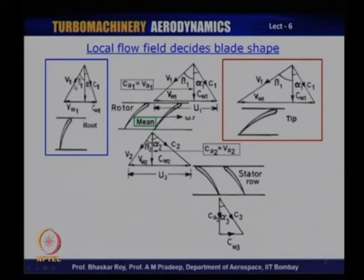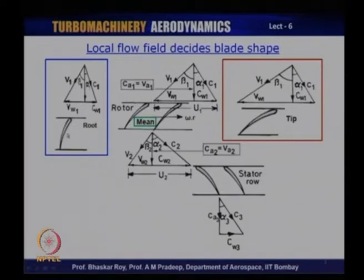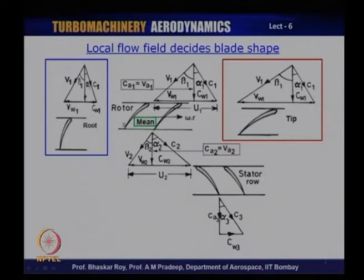At the root, the velocity V1 is much less and the angle beta 1 with reference to the axial direction is much less. The tangential component V_W1 is also much less, even if C1 remains of the same order. As a result, the root section of the blade now needs to be oriented towards this direction. Hence the orientation of the root section is quite different from the orientation of the mean section. The root section has to be at a different angle and the mean section would have to be at a different angle, in consonance with the relative flow angle with which they are coming in.